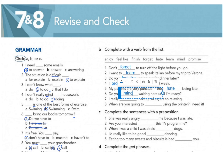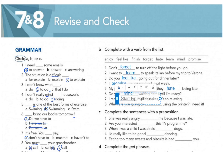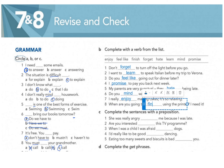Number six: 'Do you mind waiting here until I'm ready?' Number seven: 'I really enjoy making cakes — it's so relaxing.' Number eight: 'When are you going to finish using the printer? I need it.' So exercise B is done.